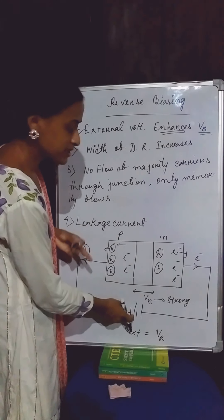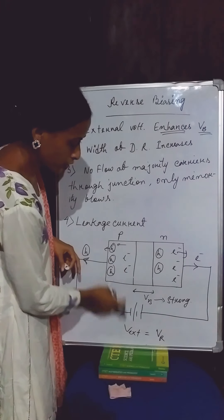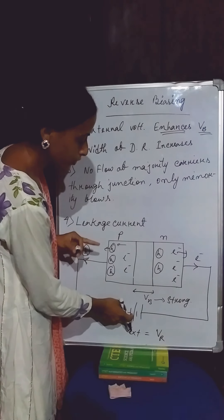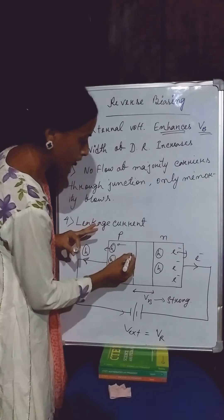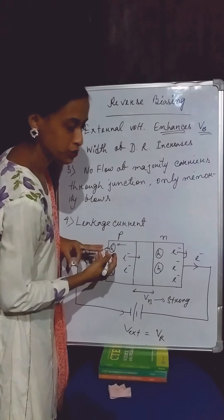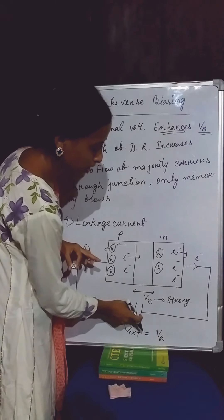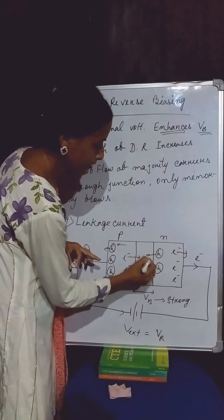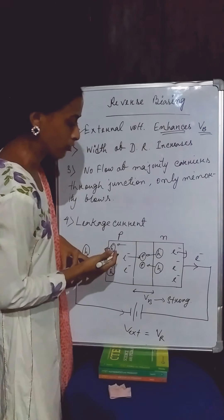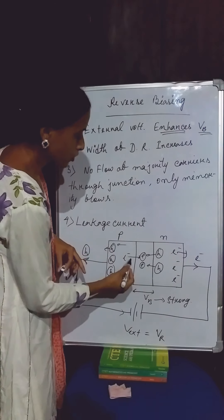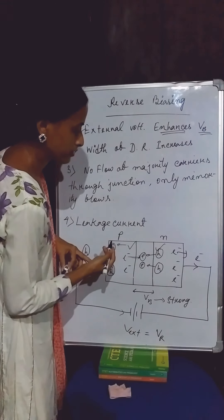Now what happens in the second step? The minority carriers in the P-section — that means electrons — are repelled by the negative terminal of the external battery towards the junction. Similarly, the minority holes in the N-section are repelled by the positive terminal of the external battery through the junction. So the minority carriers at the junction undergo recombination.